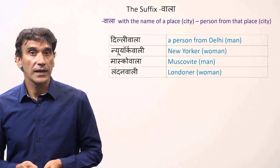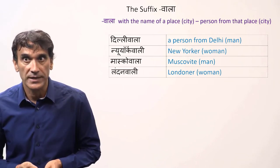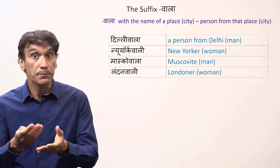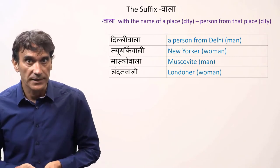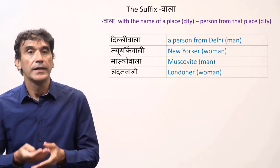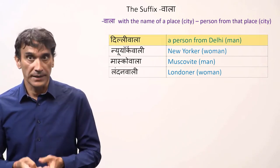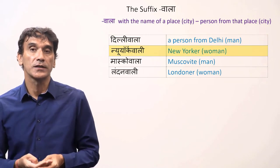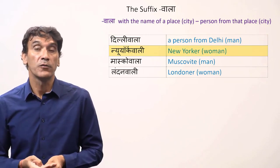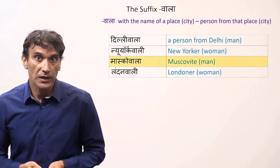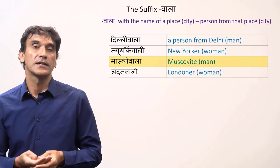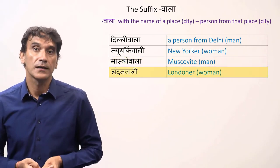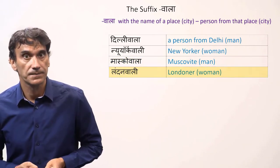If you add a place or city before wala, it shows belongingness to the place — the resident of that place or city, a person from that place. Delhi wala means a man from Delhi. New York wali means a woman from New York, a New Yorker. Moscow wala means a Muscovite, a man from Moscow. London wali means a Londoner, a woman from London.